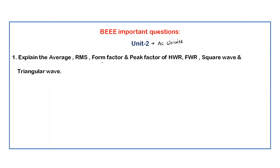In unit 2, the first question is: explain the average value, RMS value, form factor, and peak factor of a half-wave rectifier, full-wave rectifier, square wave, and triangular wave. They will give any one of these waves, and you have to find the average value, RMS value, form factor, and peak factor.